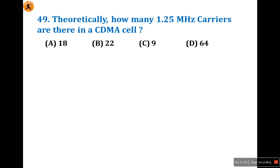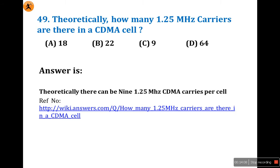Theoretically, how many 1.25 megahertz carriers are there in a CDMA cell? This is also a current trends and technology question — it is straightforward. If you know the answer you can answer in 15 seconds. The answer is 9, option C. Theoretically there can be 9 1.25 megahertz Carrier Sense Multiple Access carriers per cell used in 9 cells. So option is C.